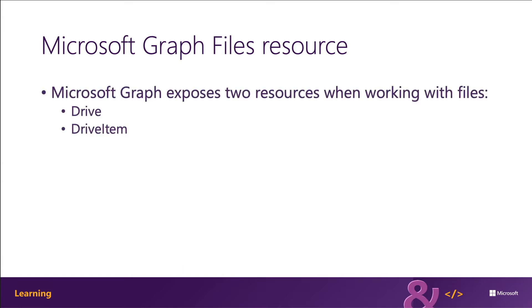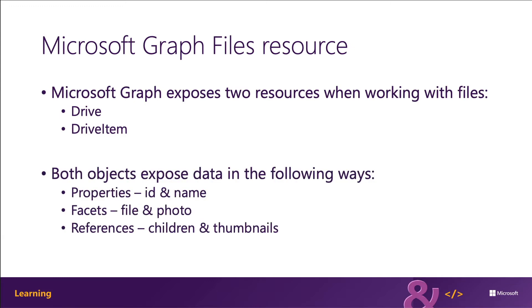There's a drive, and that represents the logical container of files, like a document library or a user's OneDrive. A drive item represents the item within a drive, like a document, a photo, a video, or a folder. These two types expose data in the following ways: there are properties, such as ID and name, exposed as simple values like strings, numbers, and booleans. There are facets, such as file and photo, which are complex values — the presence of facets indicates behaviors and properties of the drive item. And there are references, such as children and thumbnails, that point to resource collections.